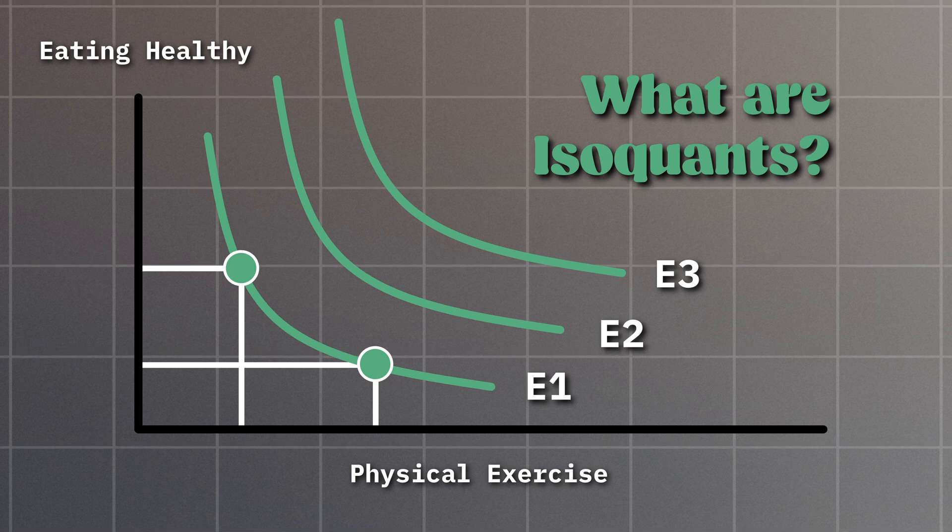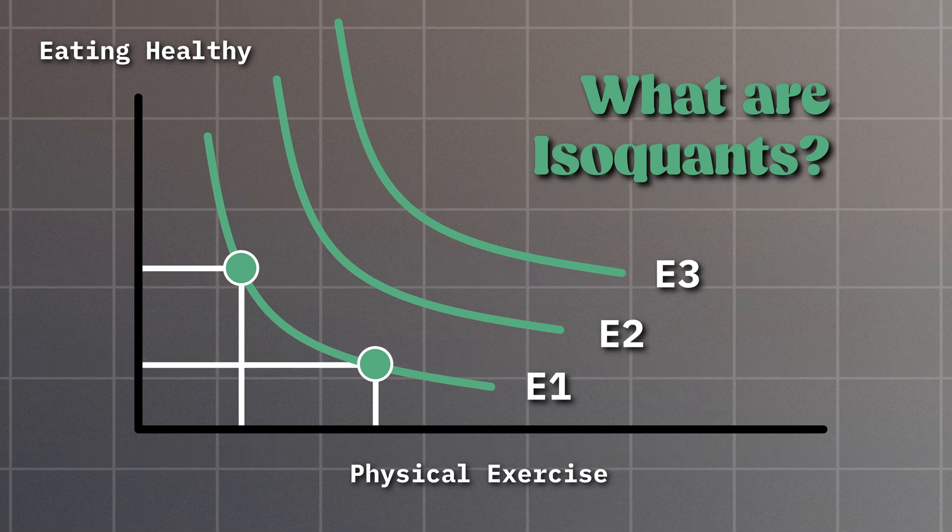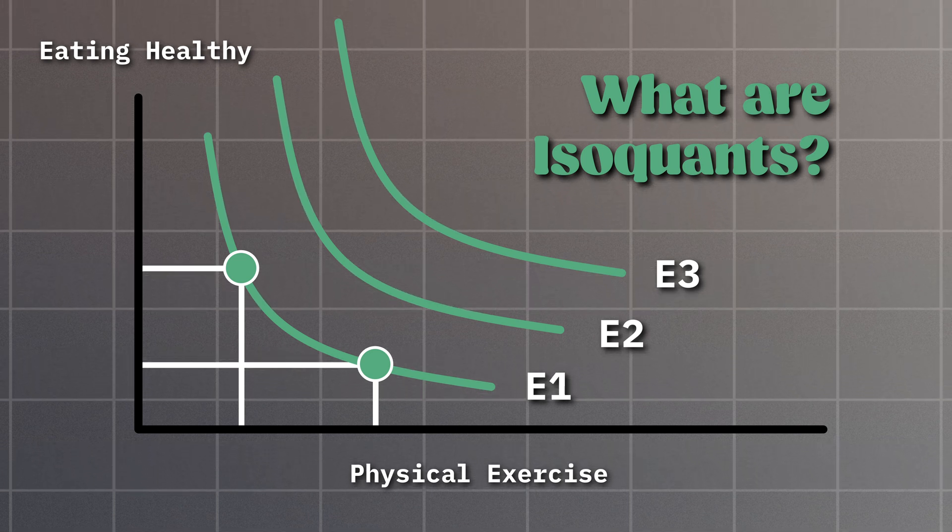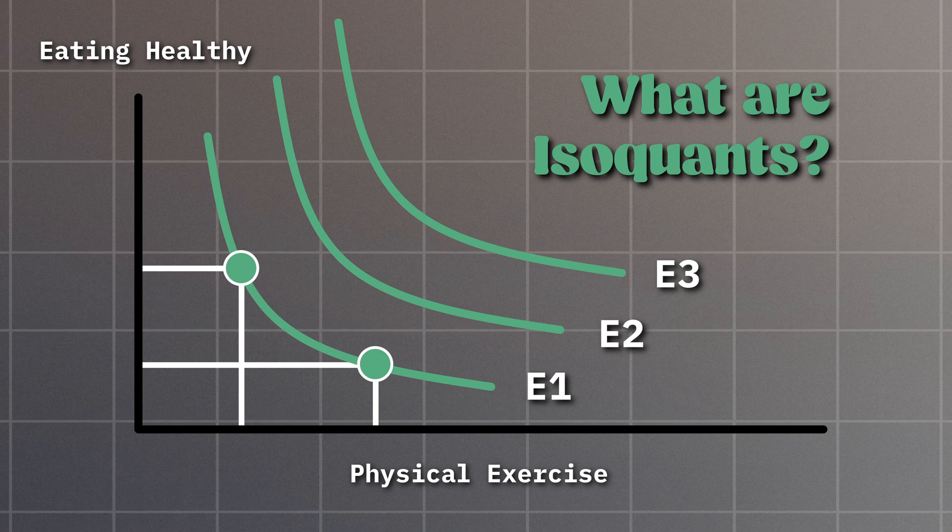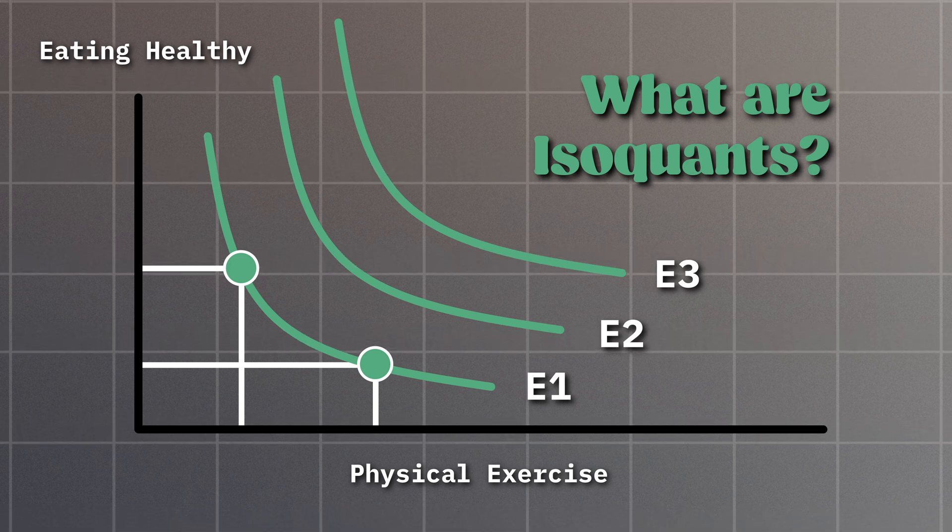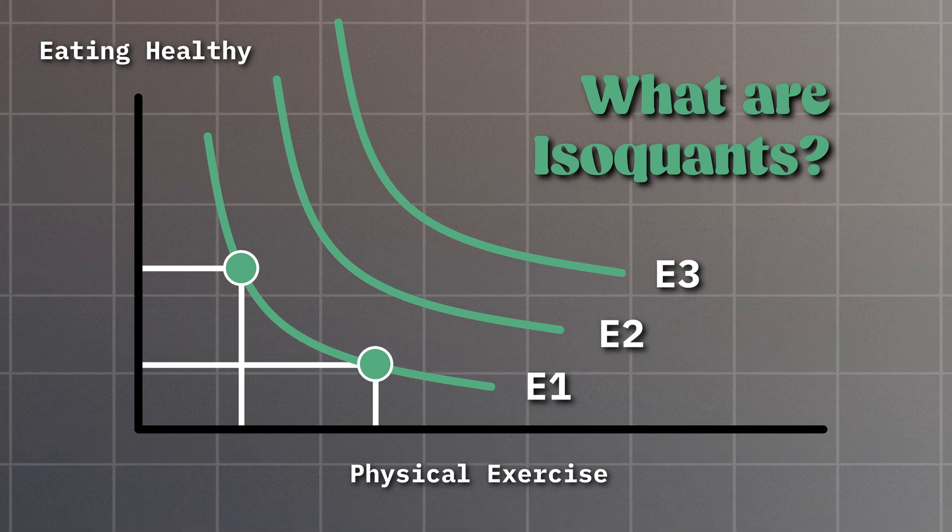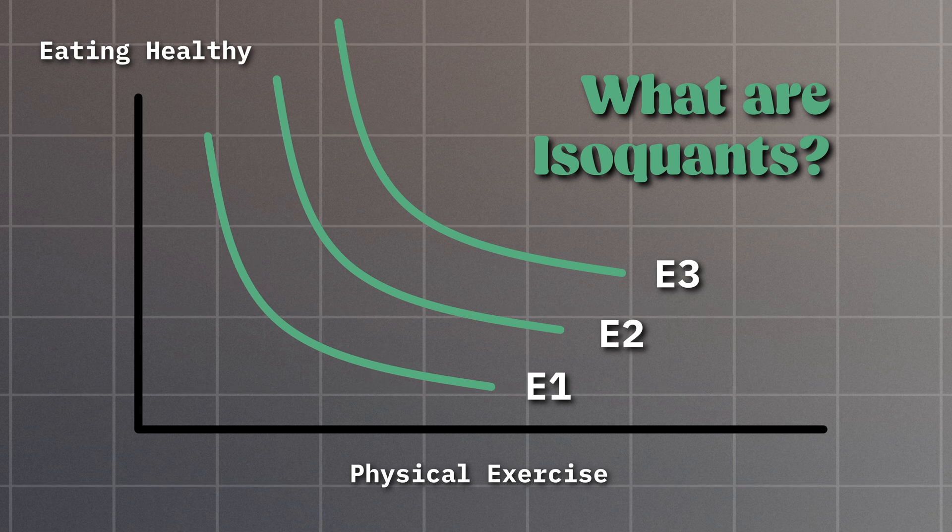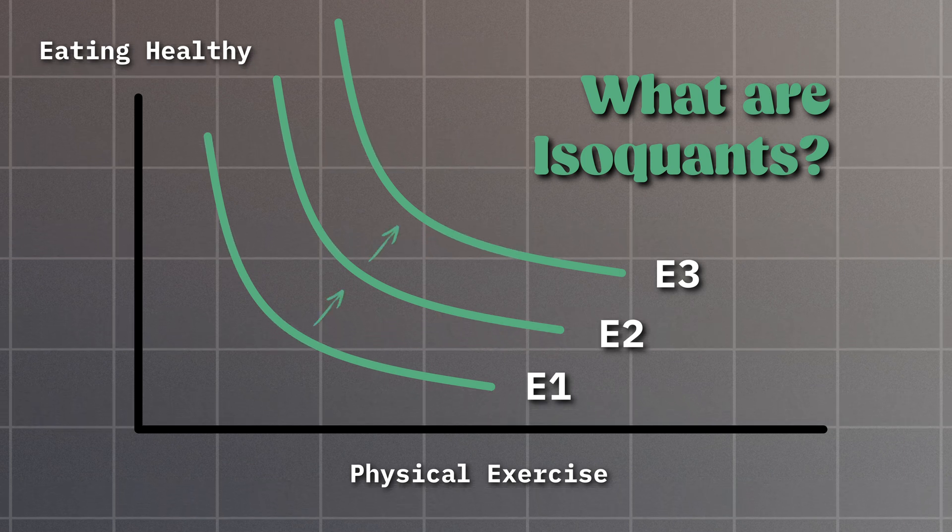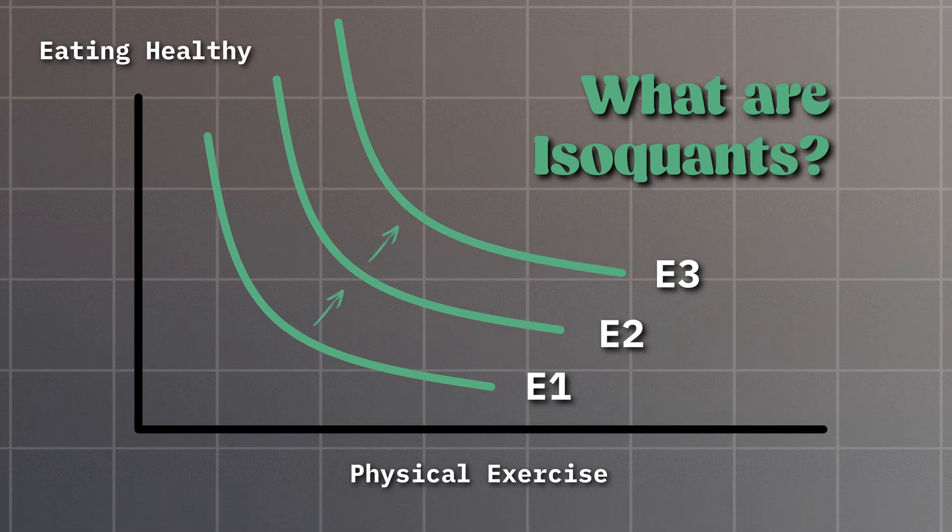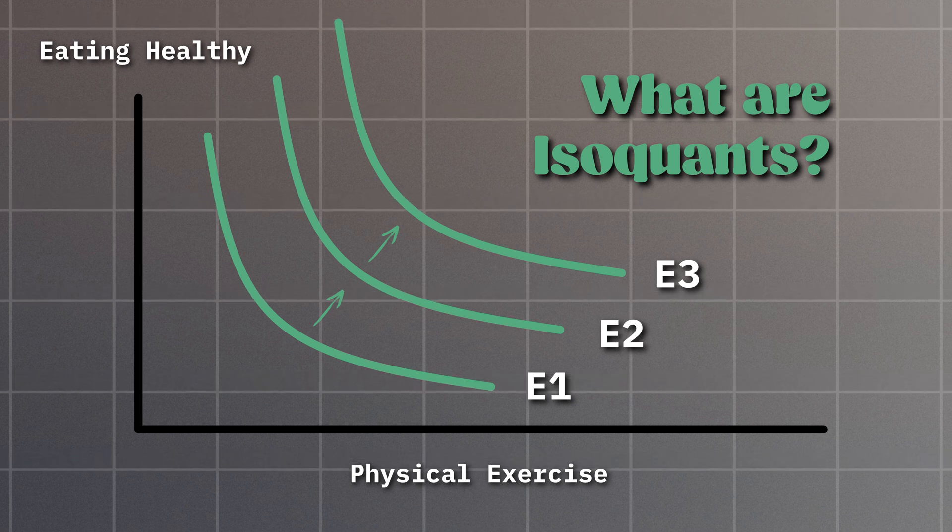That's why isoquons are also referred to as indifference curves, given that all possible combinations of eating healthy and exercising produce the same amount of health stock, so we don't care which of those combinations we pick. However, if we want to move to higher isoquons, like E2 or E3, we will increase our health stock, resulting in better health.